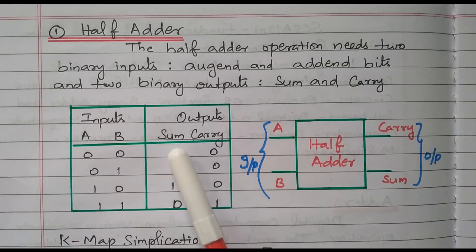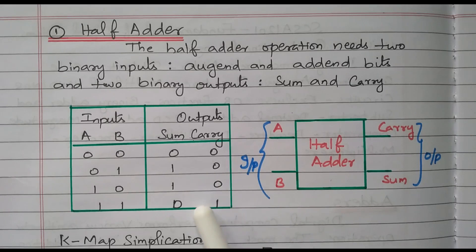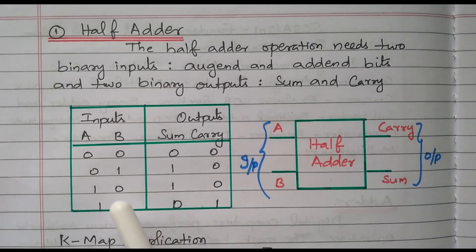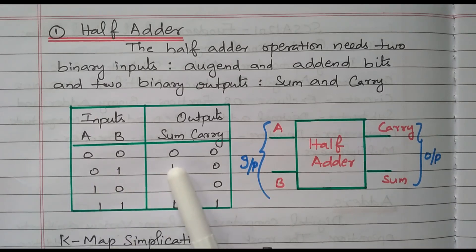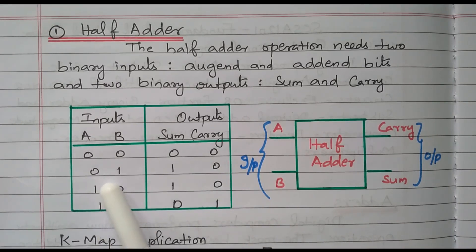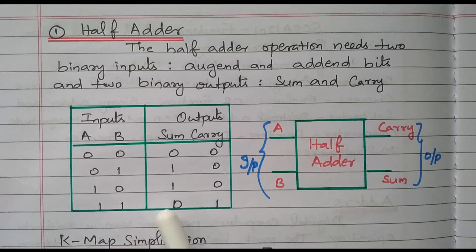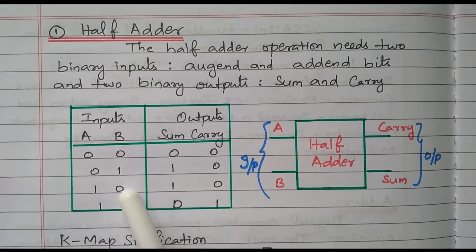The output is sum and carry. While adding two digits, the carry is generated — that carry should be added with the consecutive next digit. Suppose A and B both are 0: 0 plus 0 means sum is 0, carry is also 0. For 0 plus 1: sum is 1, carry is 0. For 1 plus 0: sum is 1, carry is 0. So for the first three combinations, the carry is 0; the carry is not generated.